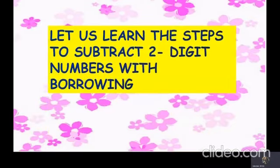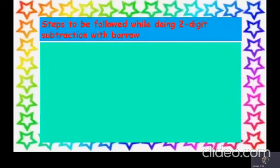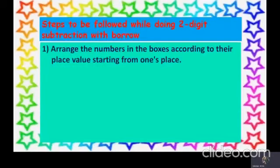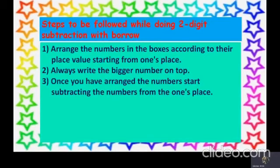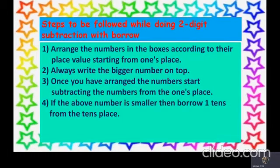Now let us learn the steps to subtract a two-digit number with borrowing. Earlier we learned the steps to subtract two-digit numbers without borrowing. This time we are going to learn subtraction with borrowing, so kindly pay attention. Arrange the numbers in the boxes according to place value starting from the ones place. Always write the bigger number on top. Once we have arranged the numbers, start subtracting from the ones place. If the above number is smaller, borrow one tenth from the tens place. Once we start with the examples, you will get a clear idea of how to solve this.